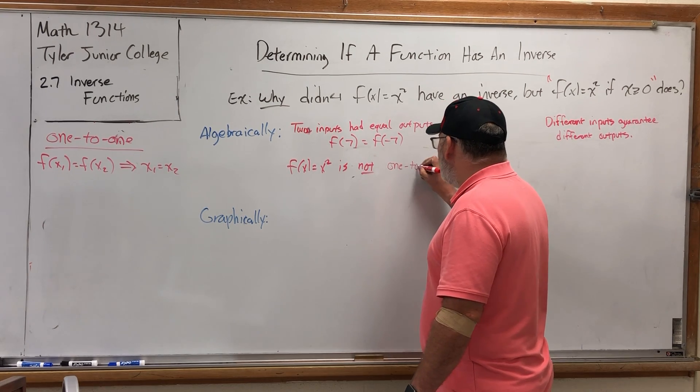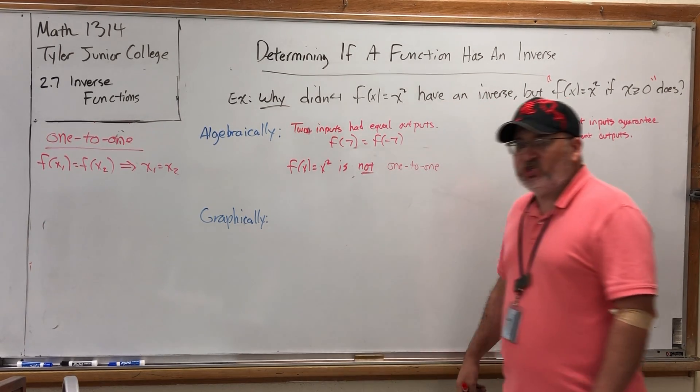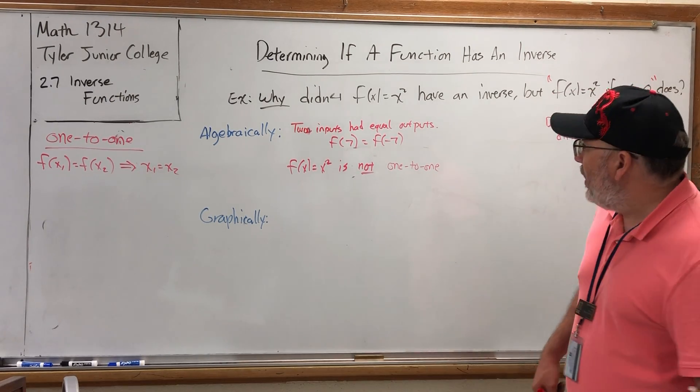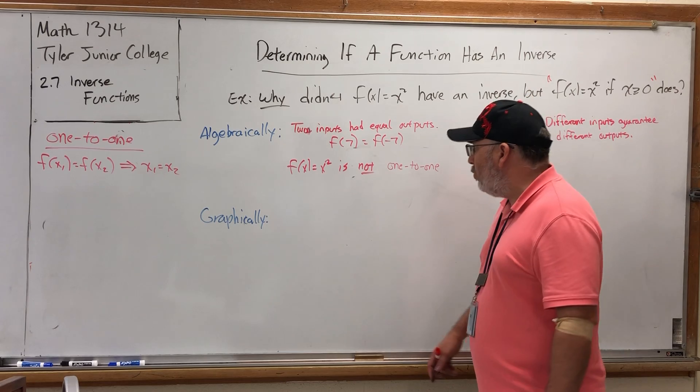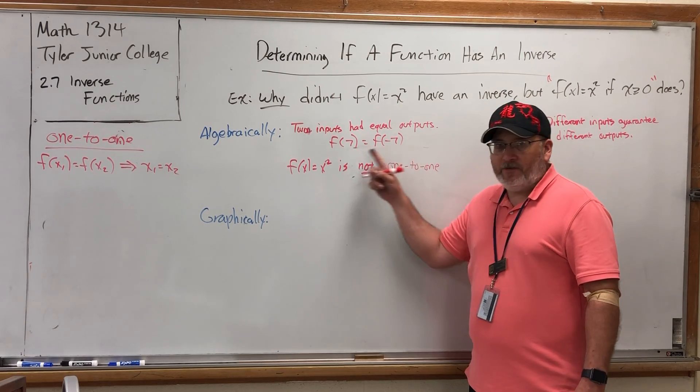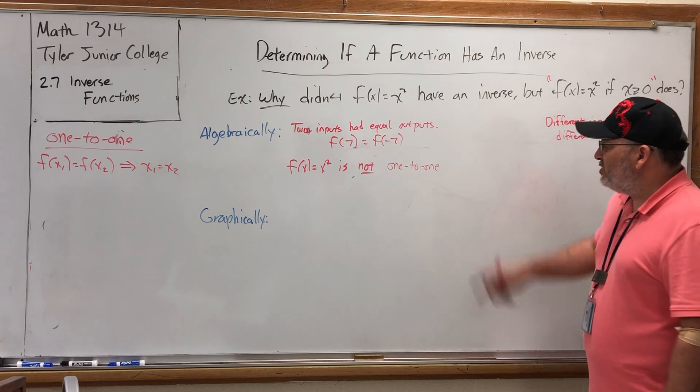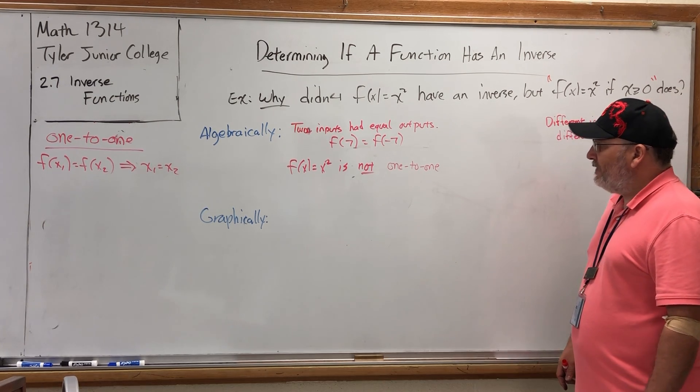And by the way, the phrase one-to-one means one x to one y, not two x's to one y. This function could be called two-to-one because it can take two different x's and produce the same y value. So this function is not one-to-one, which is the reason it failed to have an inverse.